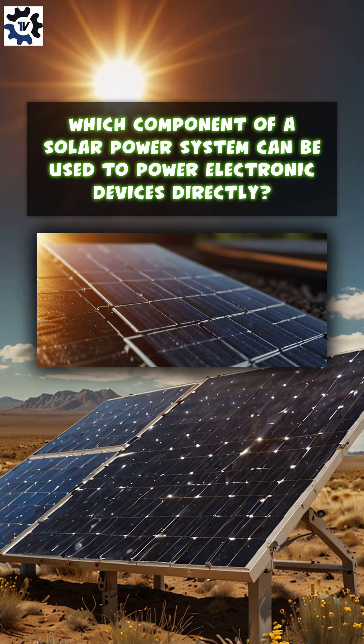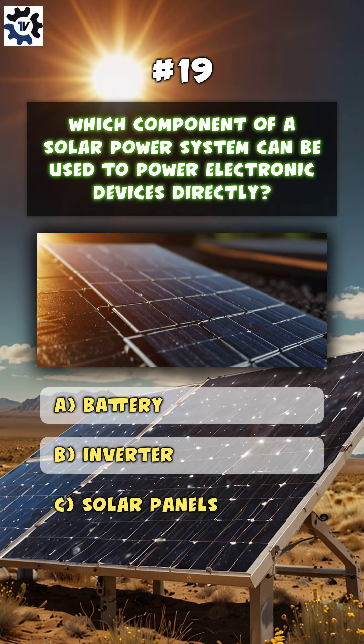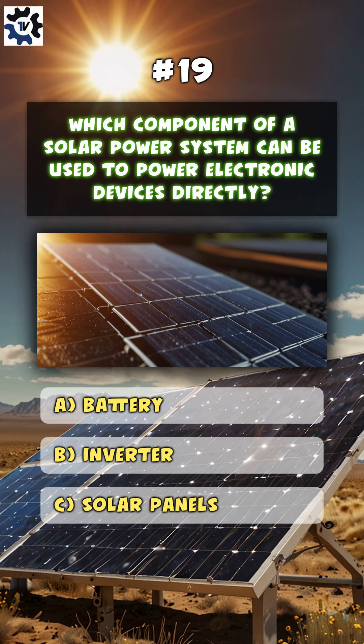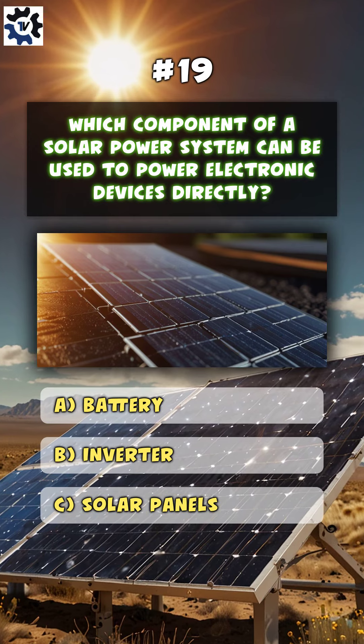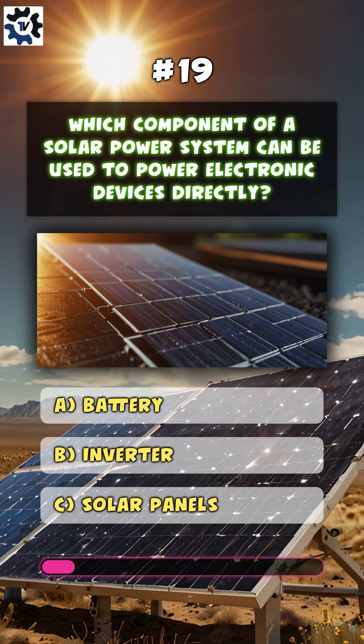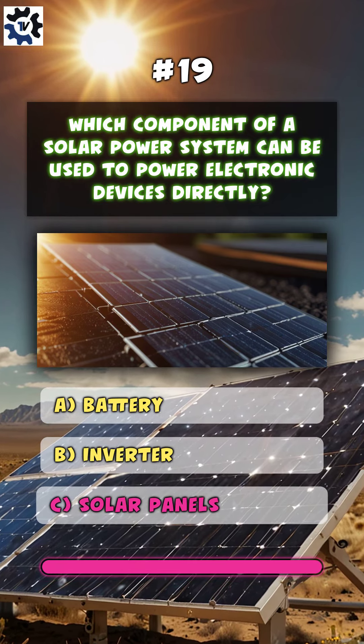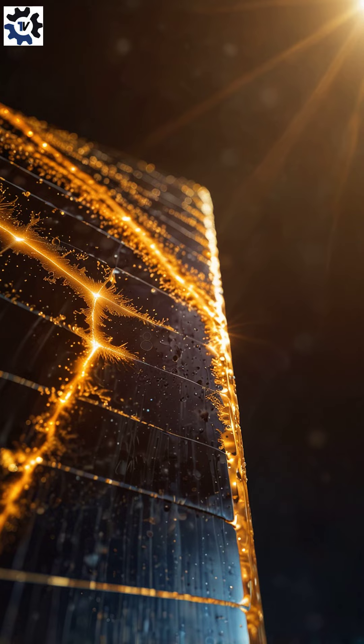Which component of a solar power system can be used to power electronic devices directly? C. Solar panels.